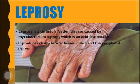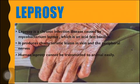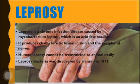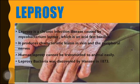Leprosy produces characteristic lesions in the skin and the peripheral nerves. Human leprosy cannot be transmitted to animals easily. The leprosy bacterium was discovered by Hansen in 1873.